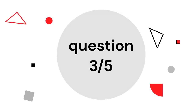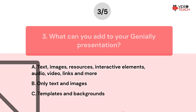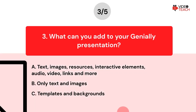Question number three. What can you add to your Genially presentation? Option A: Text, images, resources, interactive elements, audio, video, links, and more. Option B: Only text and images. Option C: Templates and backgrounds. Now you have about 15 seconds to think about your answer.